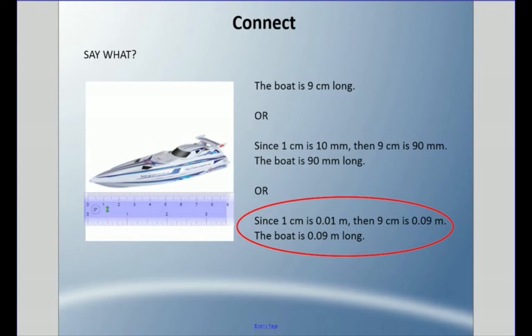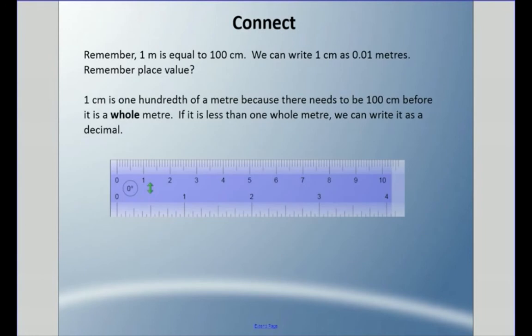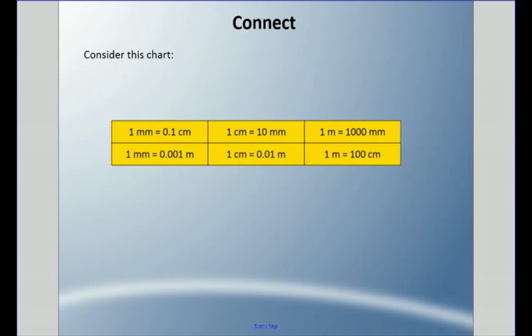We're talking about decimals here. One centimeter is one hundredth of a meter — that means one hundred centimeters equals one meter. With a hundred centimeters being a whole, each centimeter is one hundredth of a meter. So nine centimeters is nine hundredths of a meter. Remember: one meter equals one hundred centimeters. If a measurement is less than one whole meter, we can write it as a decimal.